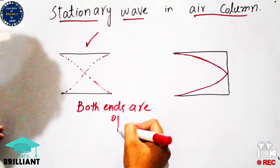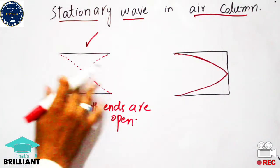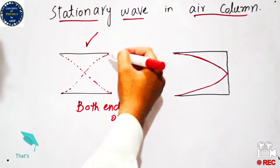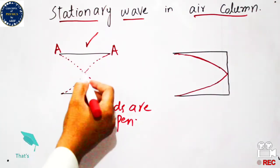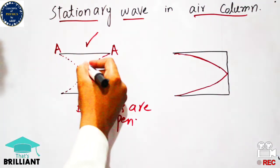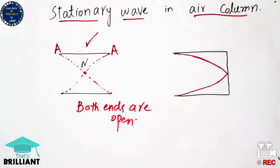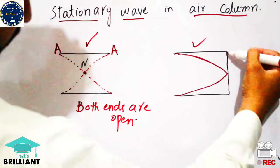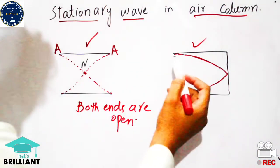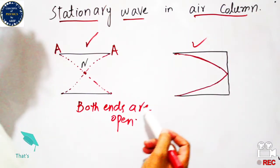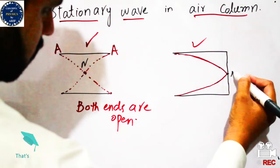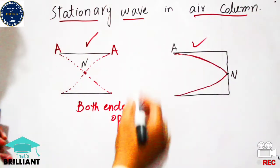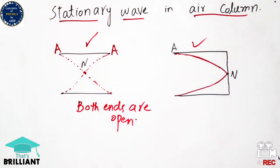In the case of a pipe which is open at both ends, anti-nodes are present at the corner points of the pipe and nodes are present at the central point. In the other case, when one end of the pipe is closed and the other end is open, the air molecules are restricted to move. After interacting with the surface of the closed end, they move back.